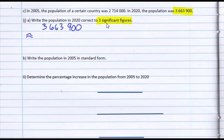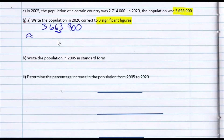Since we only want 3 significant figures, we're looking at the first 3 digits of the number. We look up to the third one, since we want 3 significant figures, and we ask ourselves: do we need to round it up or do we need to maintain it? It's important that we look at the next digit. Since it's less than 5, we maintain it. So we'll write 3, 6, 6. These are the 3 significant figures.